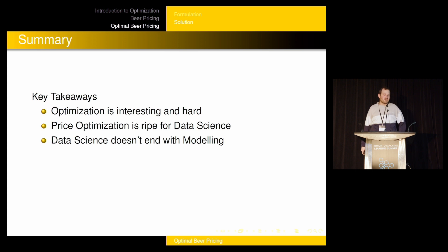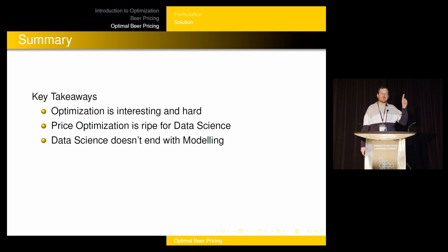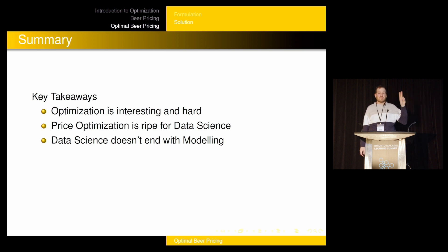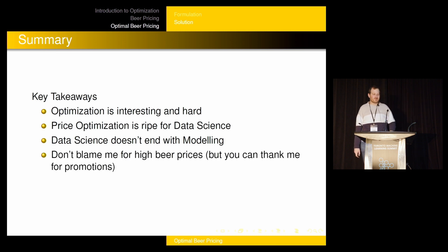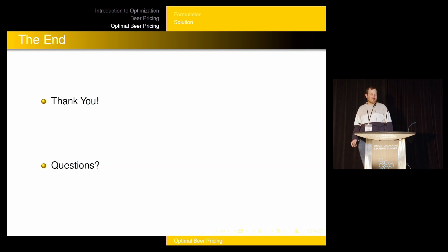Some key takeaways: optimization is interesting and hard; price optimization is ripe for data science to get involved in; data science doesn't end with modeling — there's more to data science than just modeling. And don't blame me for high beer prices — you can thank me for beer promotions, though. Thank you very much.